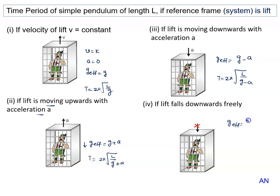g effective will be given by g minus a downward in free fall.